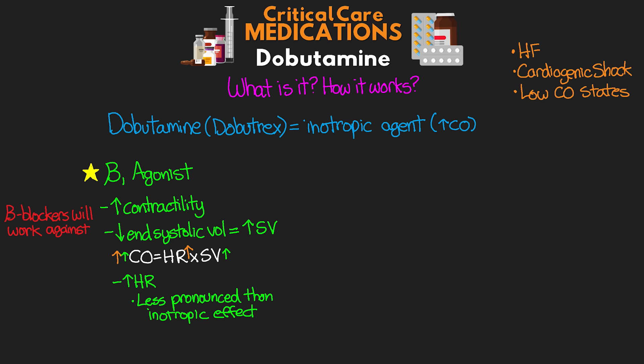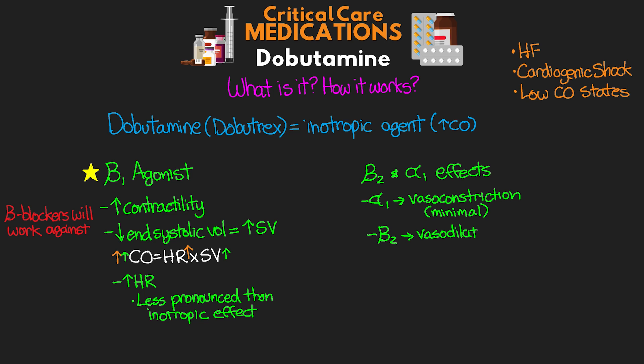In addition to the beta-1 activation, dobutamine also has some beta-2 and alpha-1 effects. Alpha-1 leads to vasoconstriction, but the effect here is actually pretty minimal. Beta-2, which is more pronounced than our alpha-1 activation, primarily leads to vasodilation. This is not always seen and sometimes just negates the alpha-1 activation, but it is certainly important to know about.